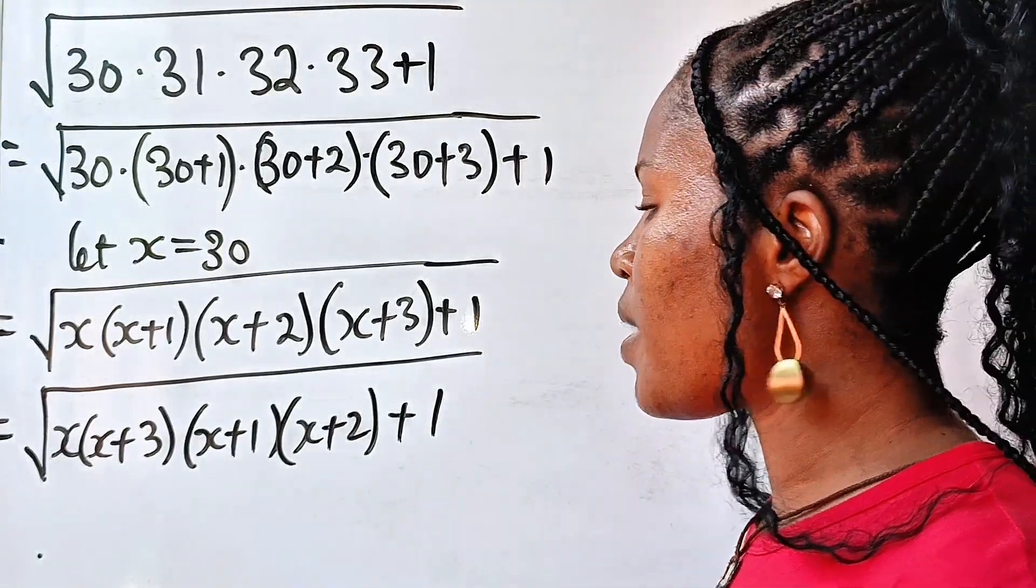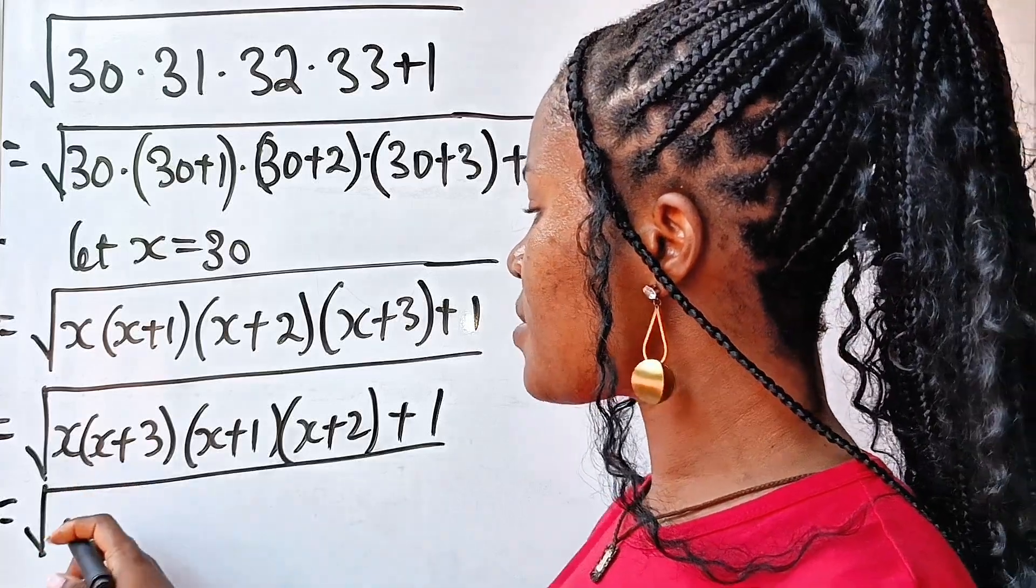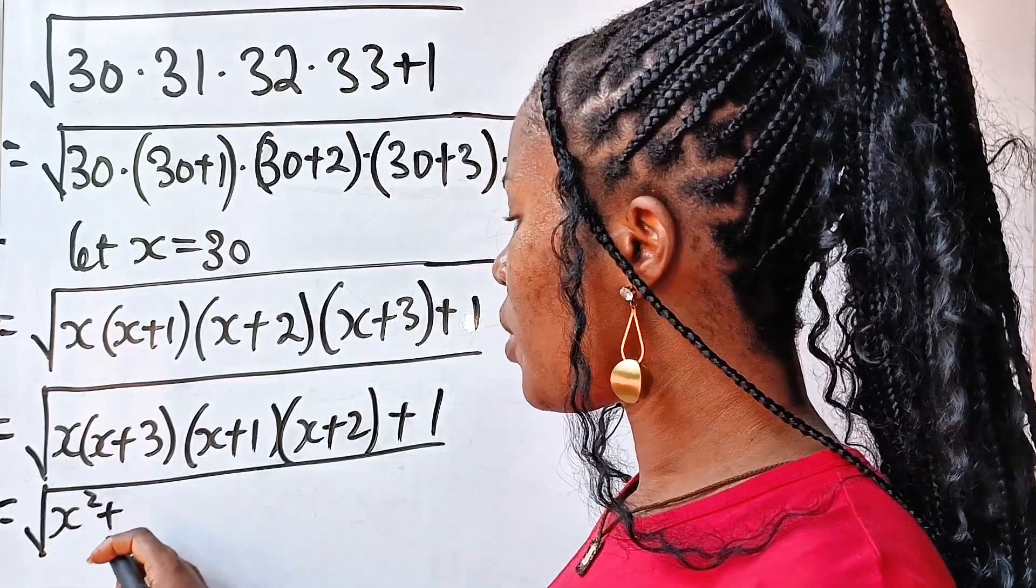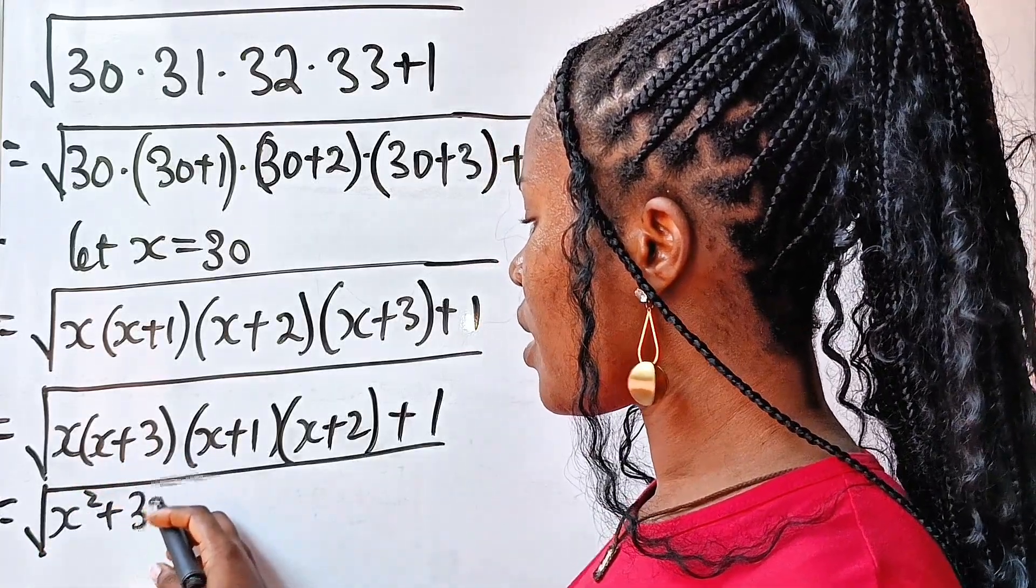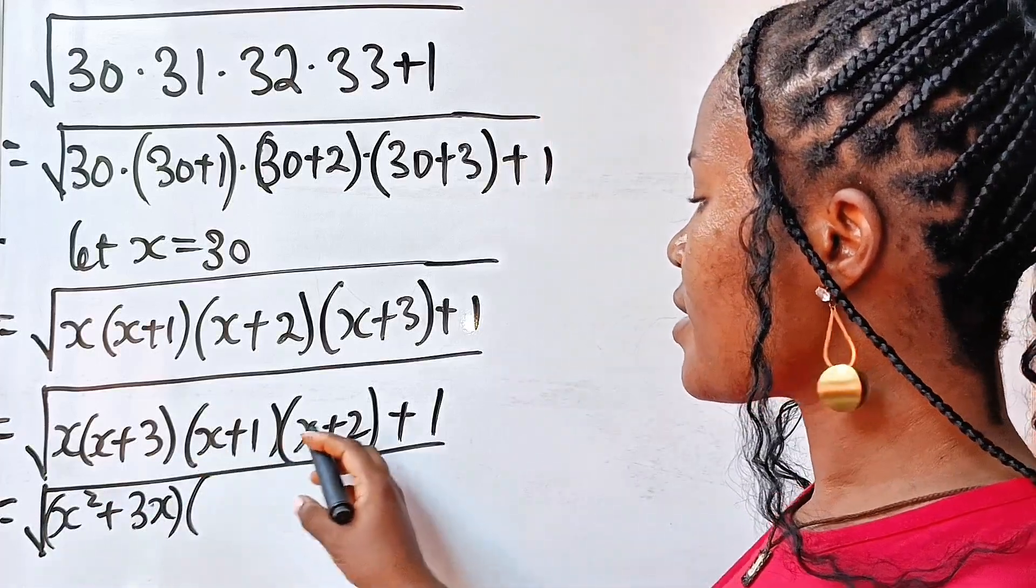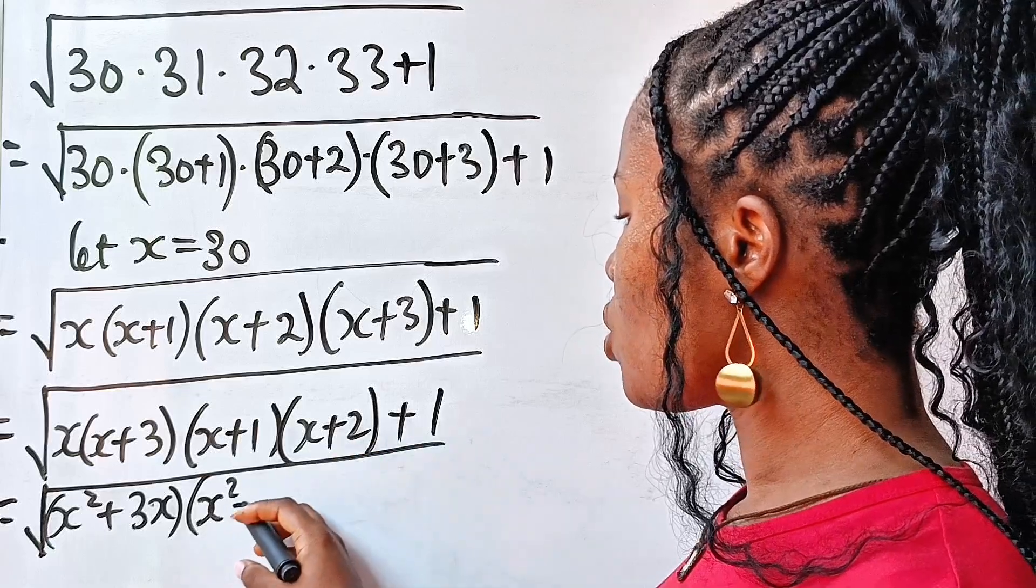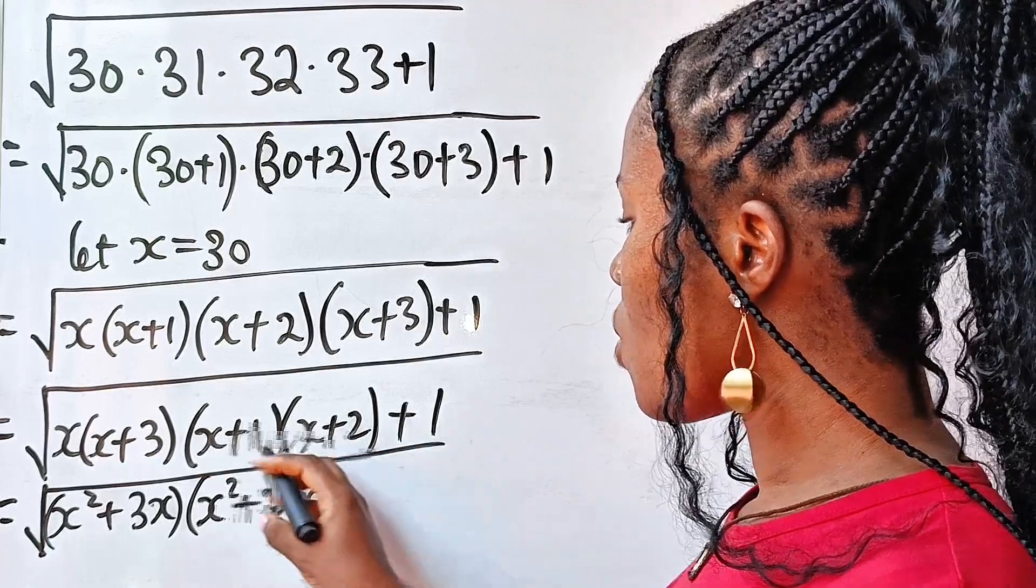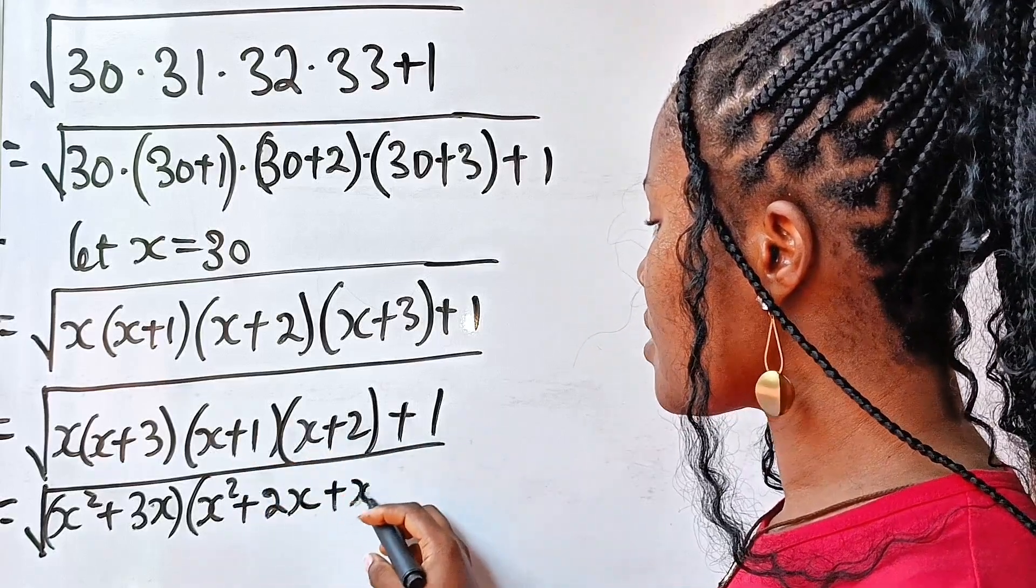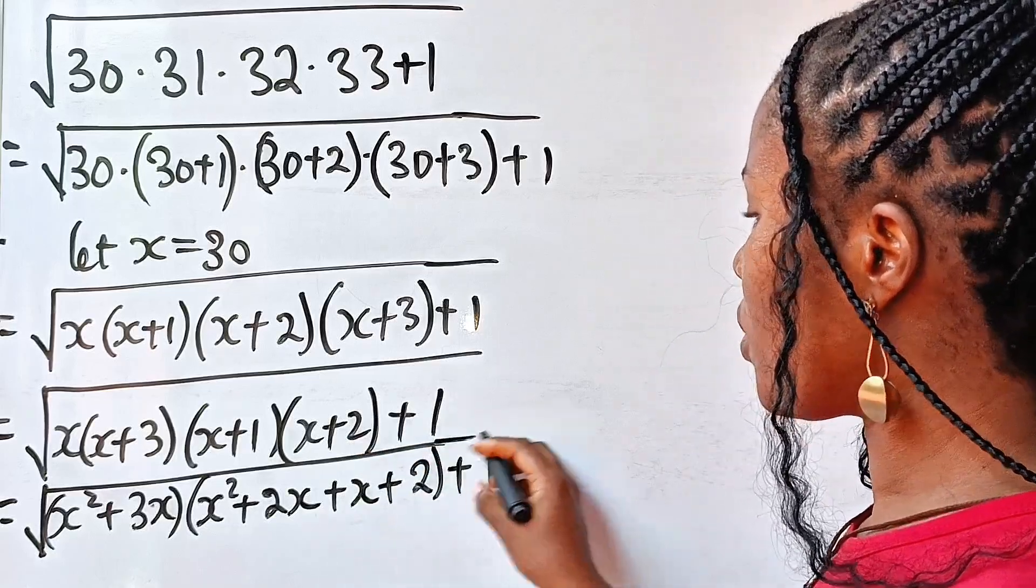Now, let's expand. So this will be equal to the square root of x times x is x squared plus x times 3 is 3x, multiplied by x times x is x squared, x times 2, we give us plus 2x, 1 times x is plus x, and 1 times 2 is plus 2. Then plus 1.